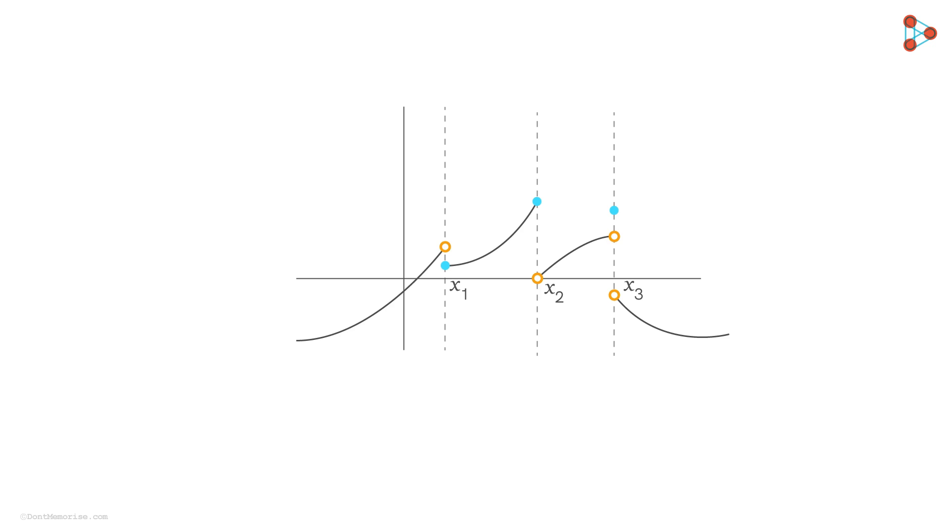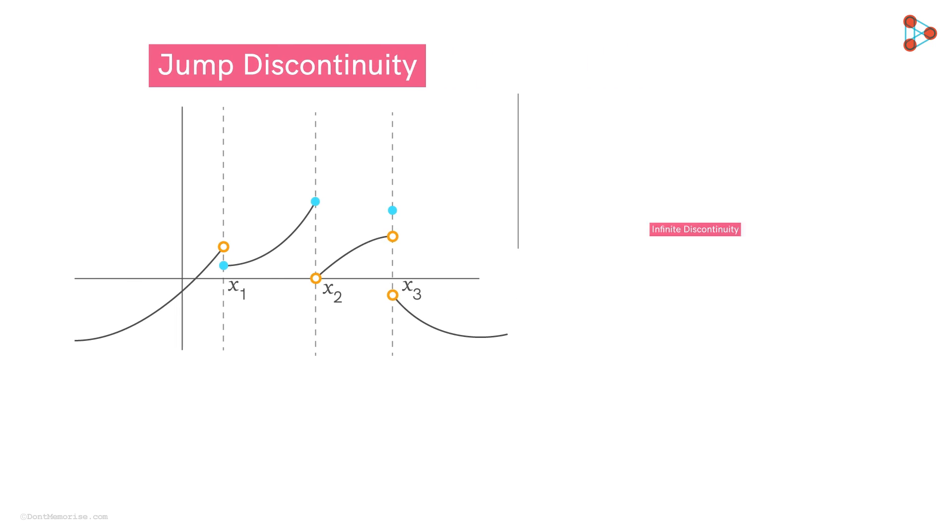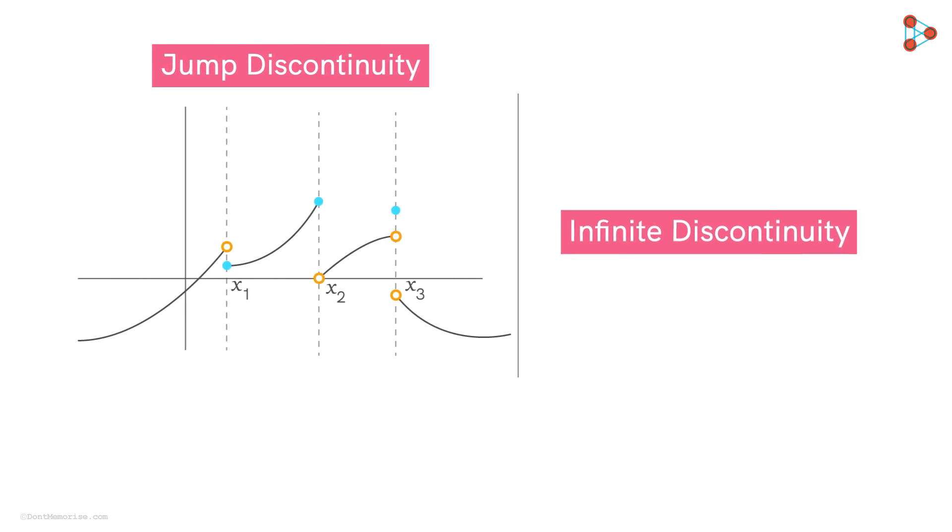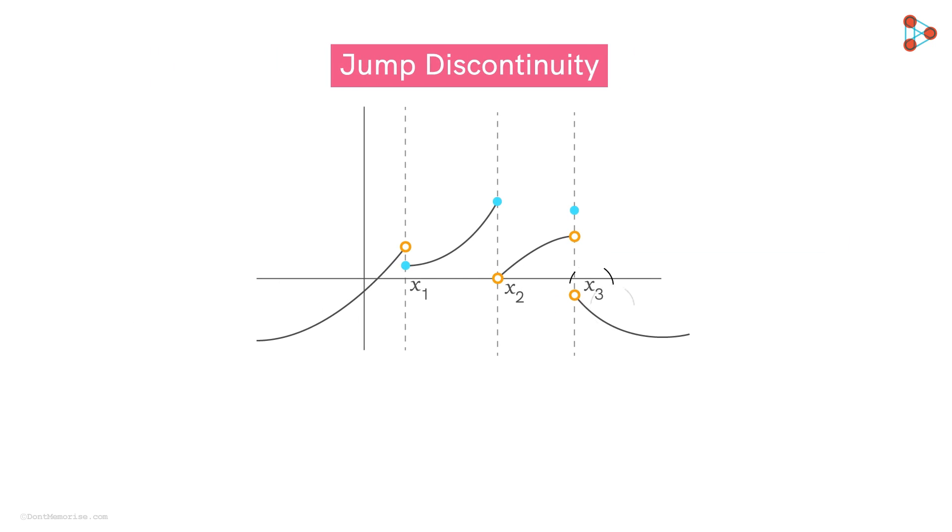More specifically, this graph represents a particular type of discontinuity called the jump discontinuity. Another type is called infinite discontinuity, but we will see that in a moment. X1, X2 and X3 are the three points of the discontinuities in this particular graph. At these values, the corresponding points on the curve are disconnected from the portion from the left or the right or even from both sides.